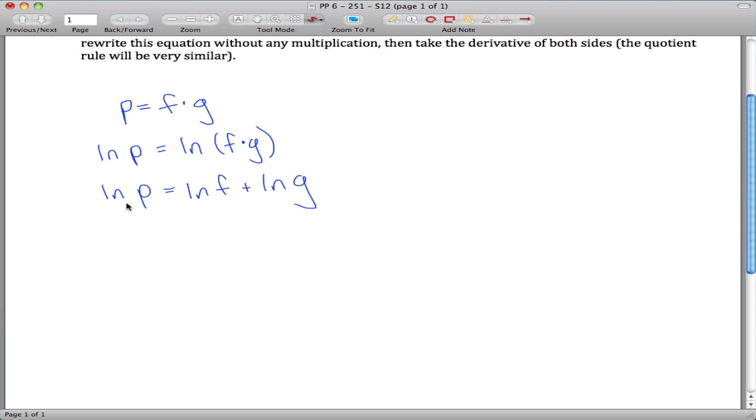So now we can take the derivative of both sides, and to take the derivative you have to be a little bit careful. This will be implicit differentiation because P, F, and G are all functions. So over here, we'll get one over P times P prime, and that's really the chain rule. The outside function is the natural log of X, the inside function is P.